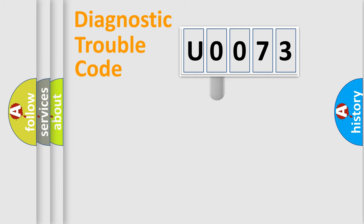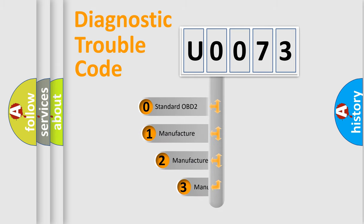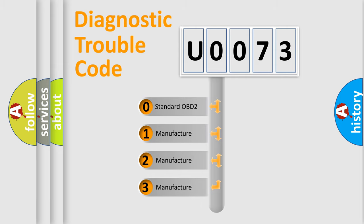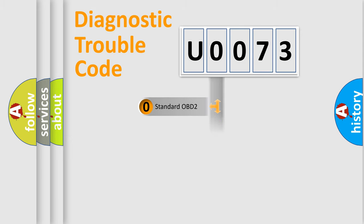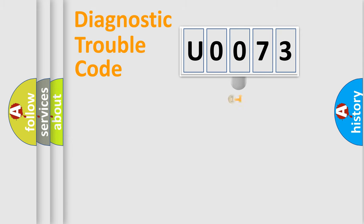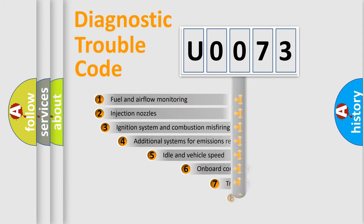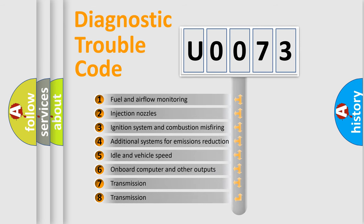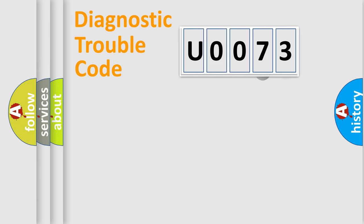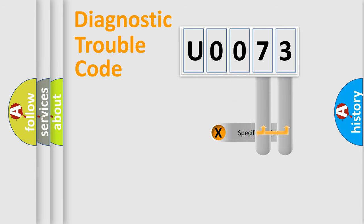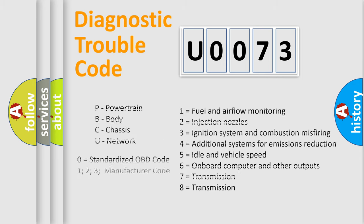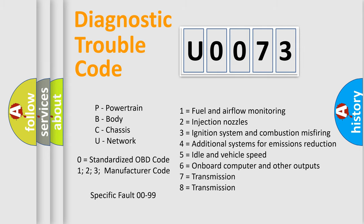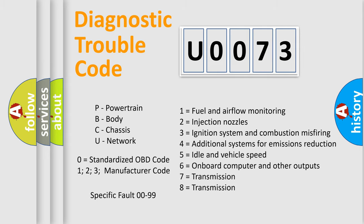This distribution is defined in the first character of the code. If the second character is expressed as zero, it is a standardized error. In the case of numbers 1, 2, or 3, it is a more specific expression of the car-specific error. The third character specifies a subset of errors. This distribution is valid only for the standardized DTC code, and only the last two characters define the specific fault of the group.